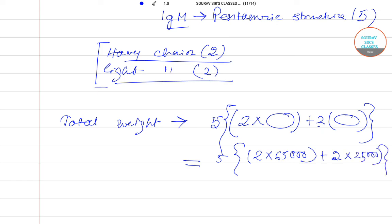And that will be equal to 900,000. That is nine lakh, so nine lakh will be the weight of the total antibody.